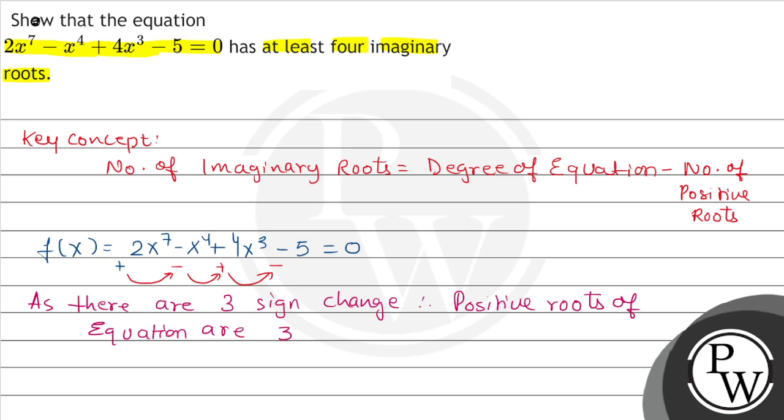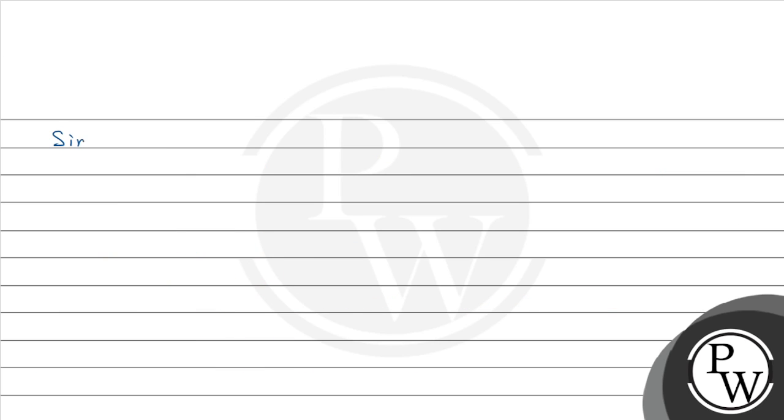Next is to check our negative roots. For that, first we will check f(-x). f(-x) = -2x^7 - x^4 - 4x^3 - 5 = 0. Now, let's see here. We have no sign change here. Since there is no sign change, therefore the given equation has 0 negative roots.